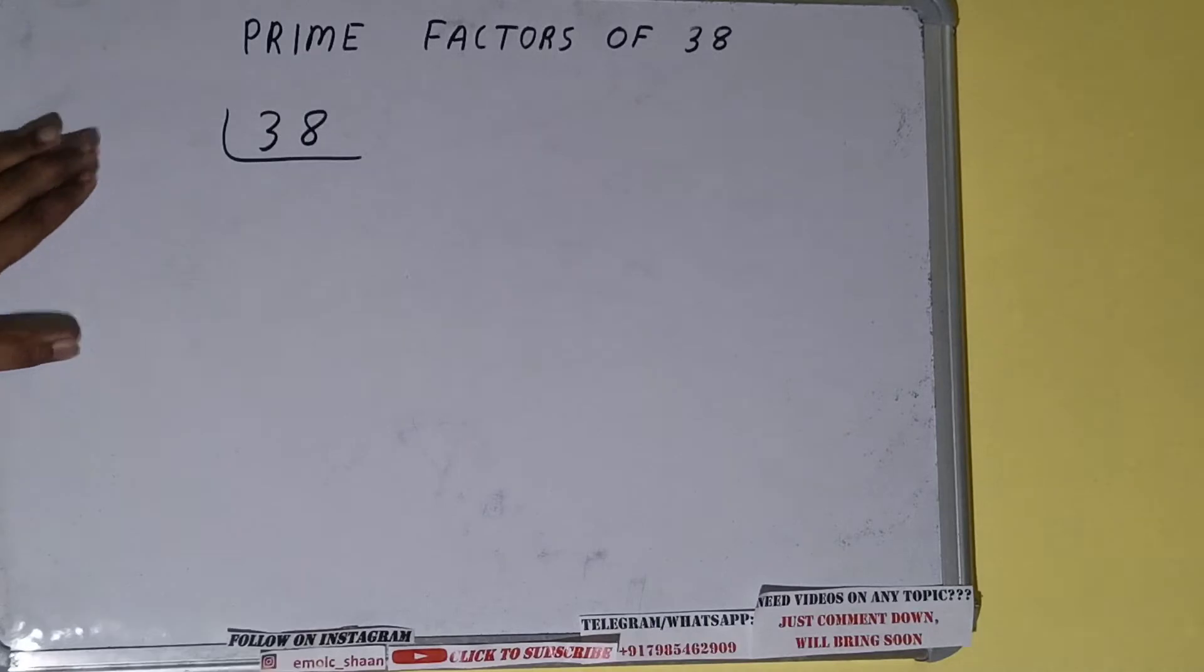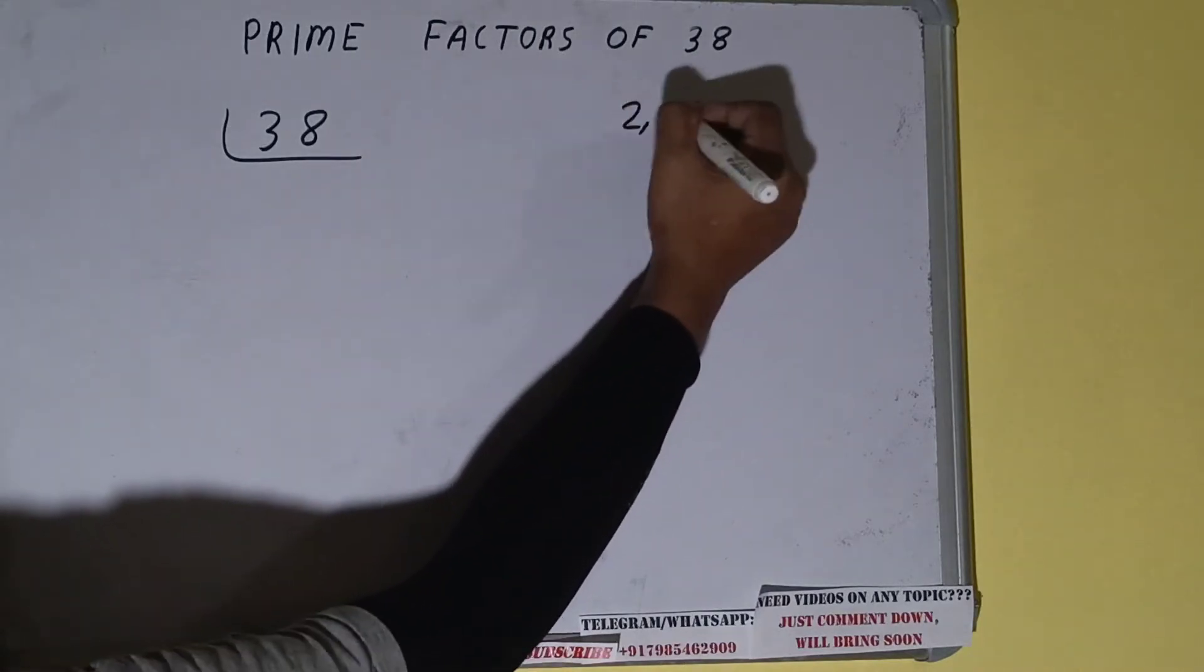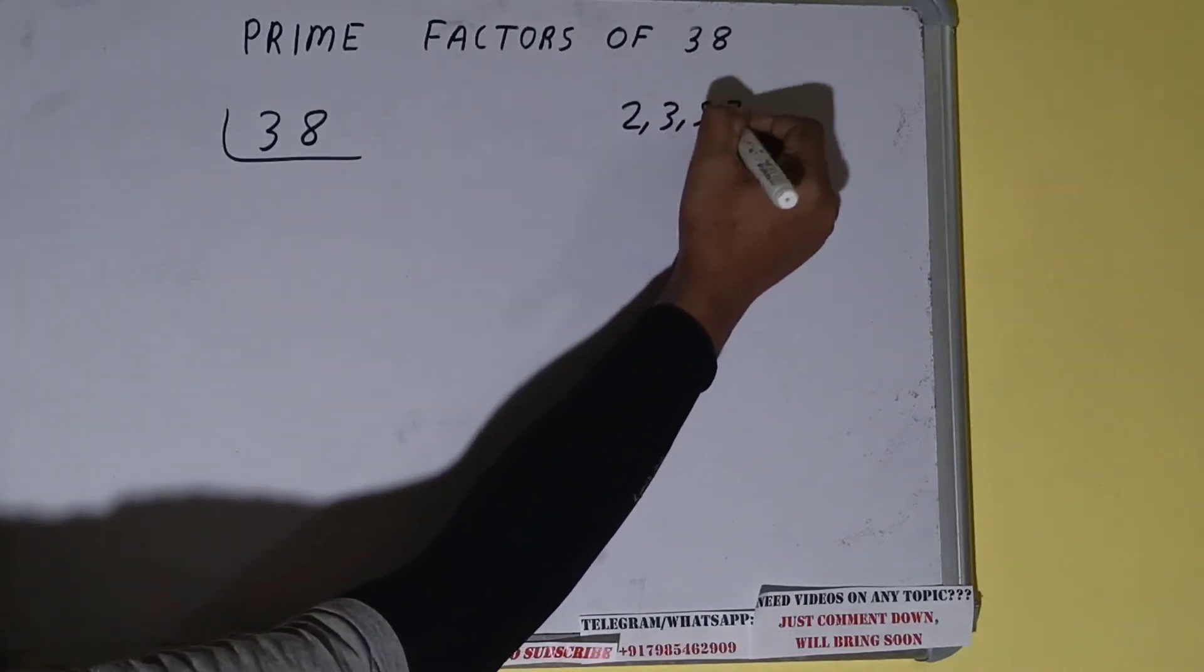The next thing we need to know about is what are prime numbers. So prime numbers are numbers that are divisible by 1 and the number itself like 2, 3, 5, 7 and so on.